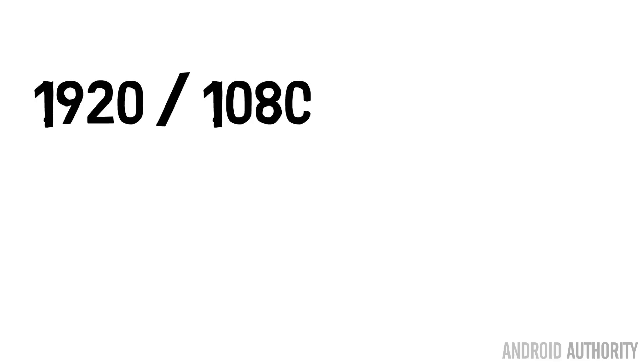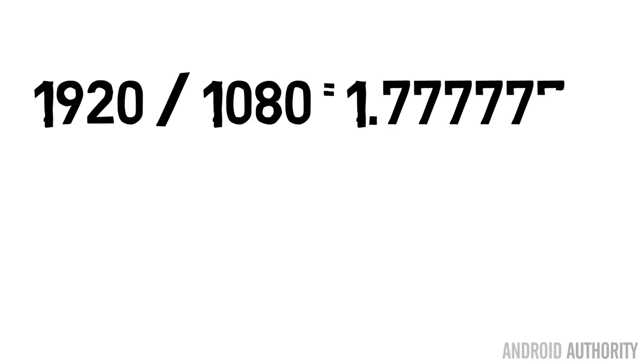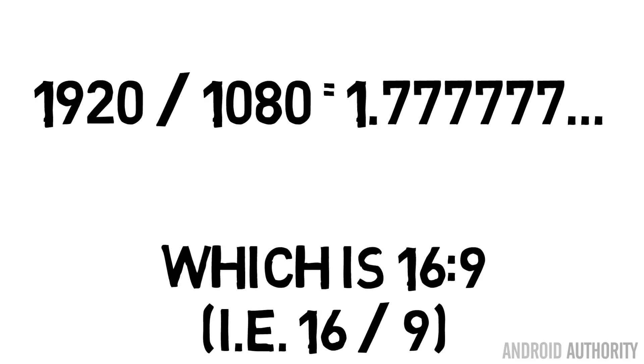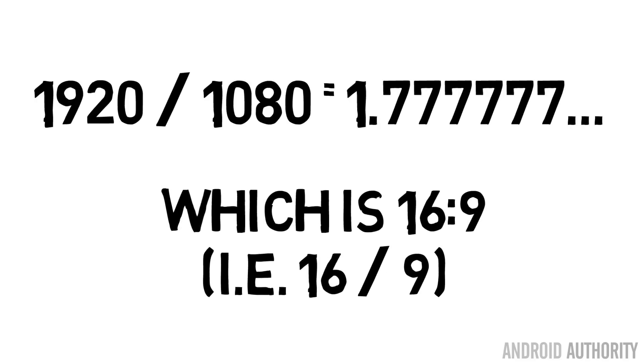In fact, the majority of smartphones have a 16 by 9 display. You don't actually have to work it out only by the physical measurements — you can also do that by the screen resolution. If you assume that every pixel is square, then a HD screen resolution is 1920 by 1080. If you divide 1920 by 1080 you get 1.7777 recurring, which of course is 16 by 9.